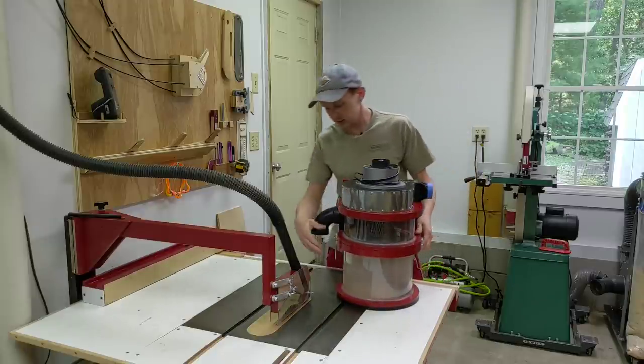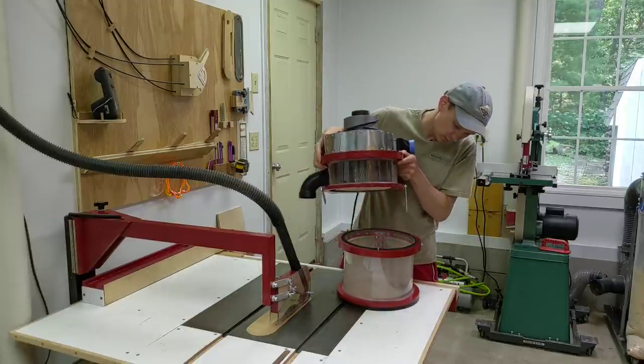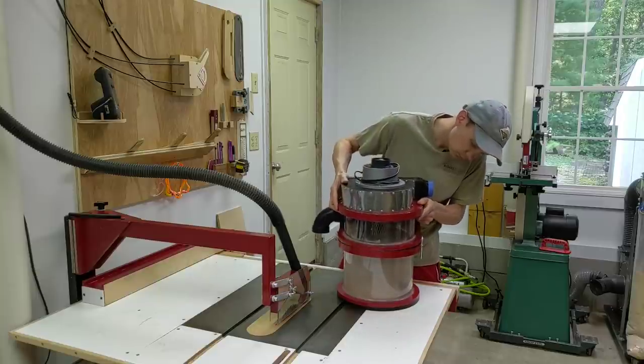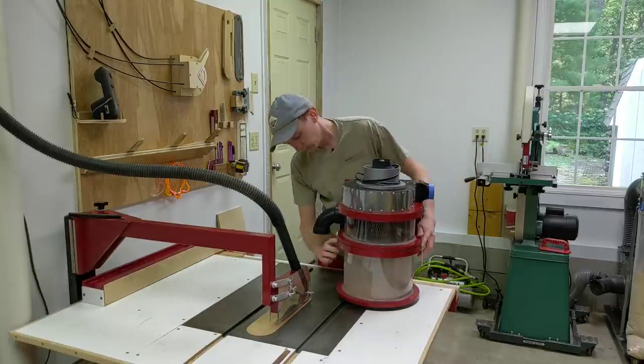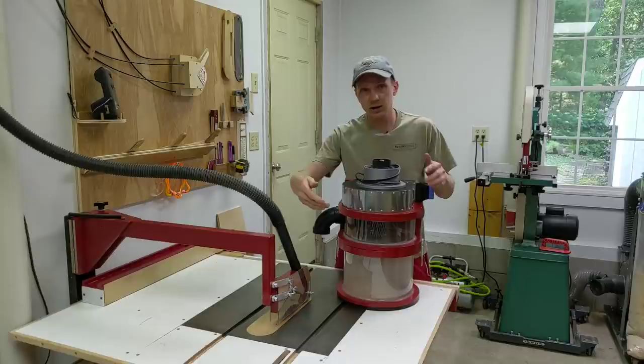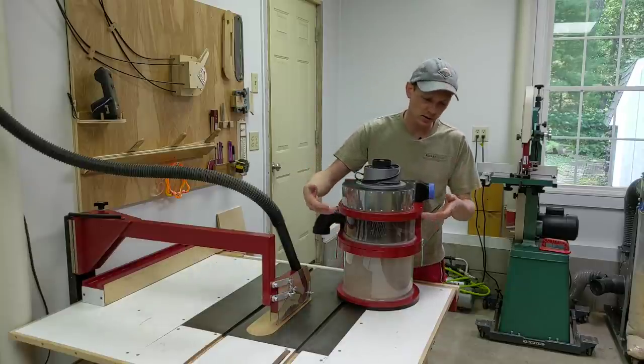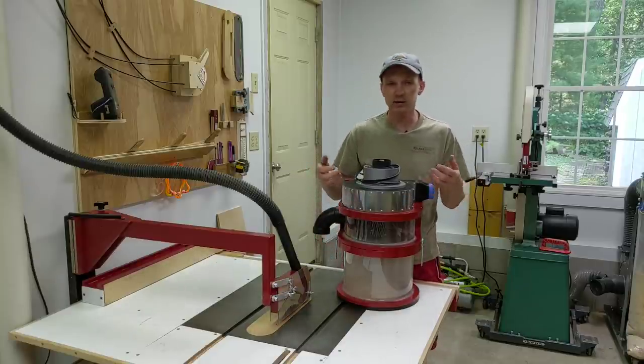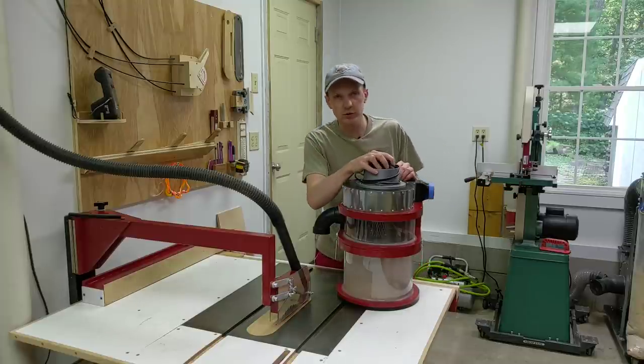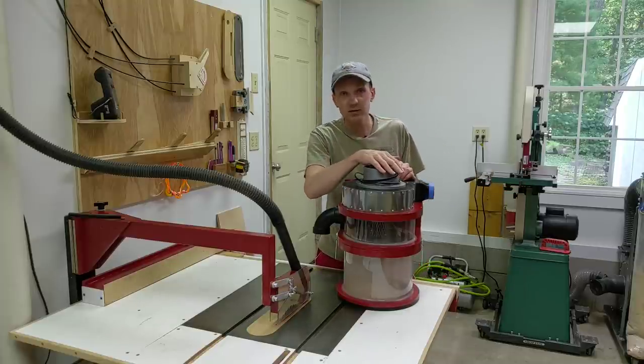It's pretty easy to empty the collection bucket. It's got a cyclone chamber to help separate the big chips and the fine dust goes out through the top, and since it's made from an old shop vac it's got a ton of suction.